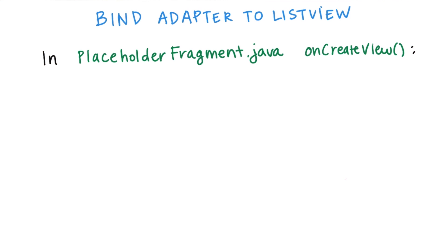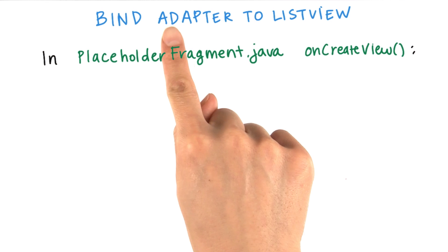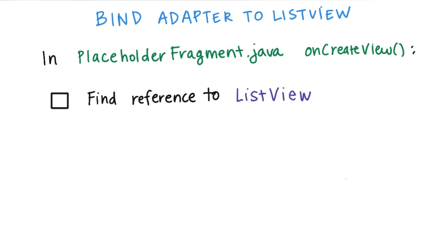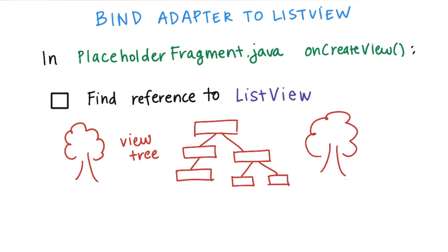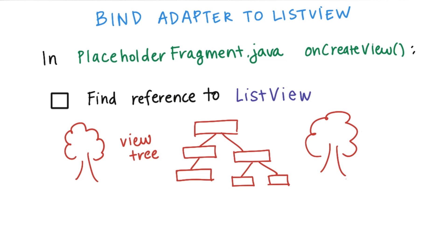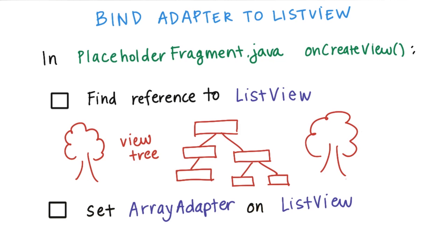Now in the placeholder fragment class, bind the adapter to the list view. Luckily, we did assign an ID to the list view earlier, so we can find it easily now. Think about the smallest subtree in the view hierarchy that you can call findViewById on, then set the adapter on it. If you want an example, you can see one in the link below. Check the boxes when you're done.